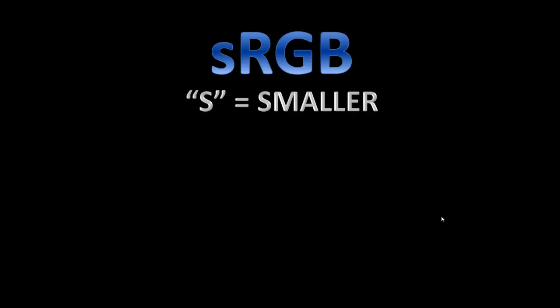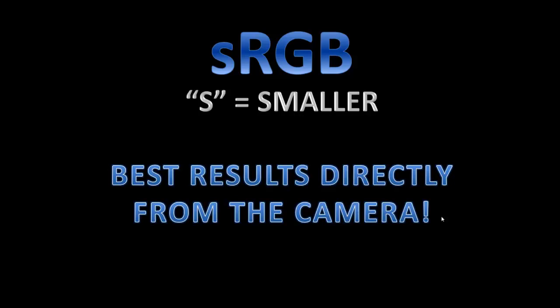sRGB is technically the inferior color space only because of its size, but it does not mean it is not the right choice for you. First of all, sRGB is going to give you the best results directly from the camera. So if you're not into post-processing or you don't feel like post-processing, sRGB is the one for you. The colors in the sRGB color space are going to be more punchy and more saturated — so if your images look a little dull, try switching to sRGB. That's plus one for sRGB.